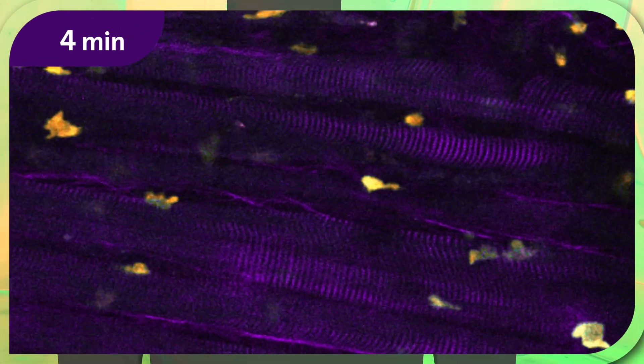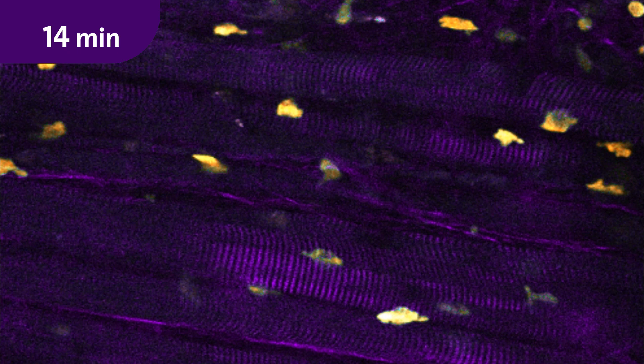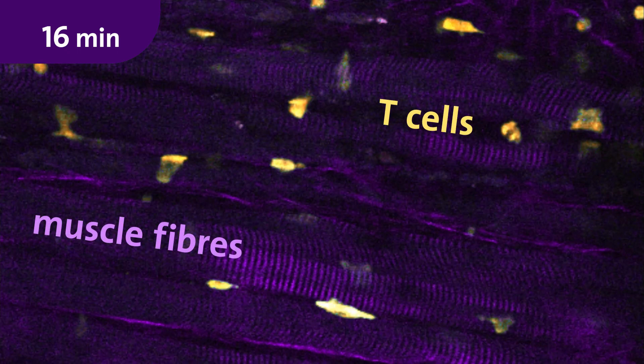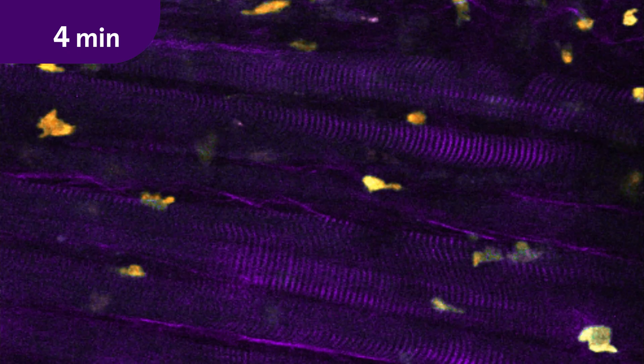In order to identify such threats, immune cells wander in large numbers through the tissue. Here, in time-lapse mode, we see T cells patrolling along the muscle fibers.